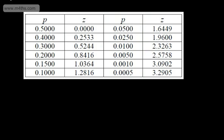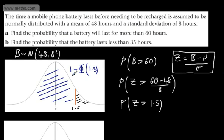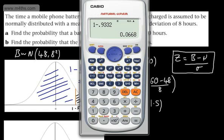That gives us 0.0668. So the probability that a battery will last for more than 60 hours is 0.0668. Nice and straightforward.